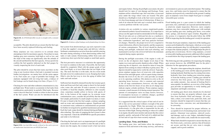Sufficient fuel should be drained from the fuel strainer or quick drain and from each fuel tank sump to check for fuel grade/color, water, dirt, and odor. If water is present, it is usually in bubble or bead-like droplets, different in color, usually clear, sometimes muddy yellow to brown with specks of dirt, in the bottom of the sample jar. In extreme water contamination cases, consider the possibility that the entire fuel sample is water. If water is found in the first fuel sample, continue sampling until no water or contamination appears. Significant and/or consistent water, sediment, or contamination is grounds for further investigation by qualified maintenance personnel.